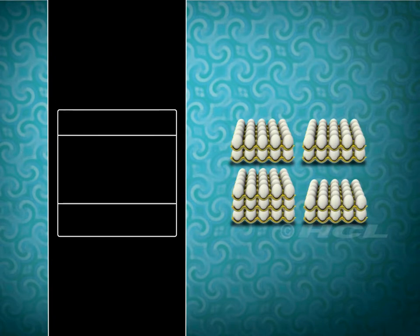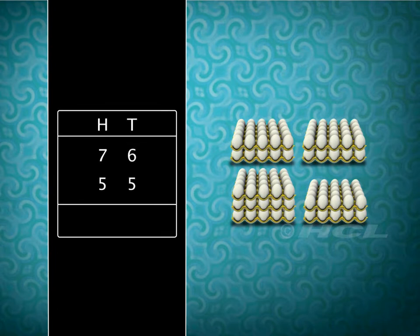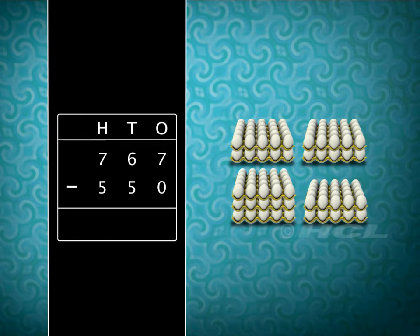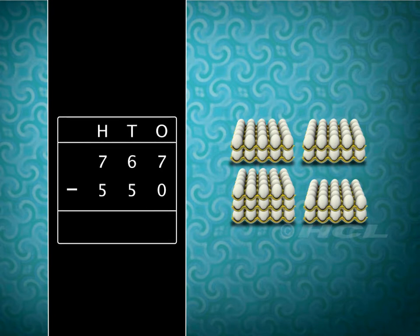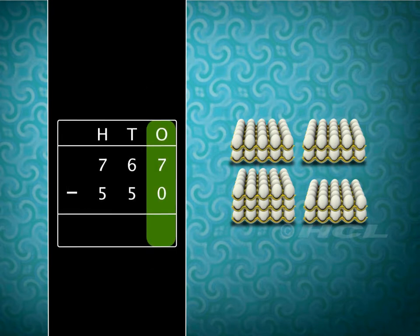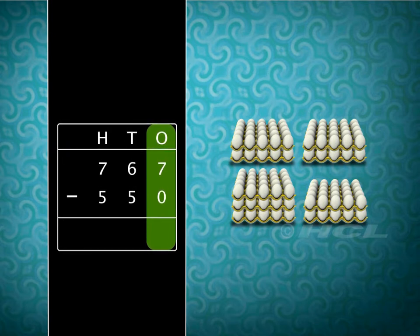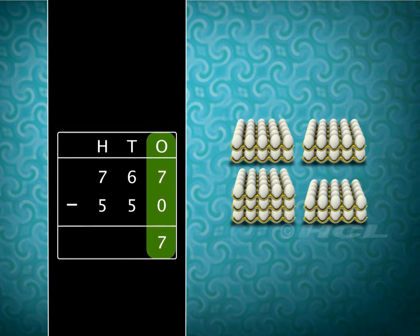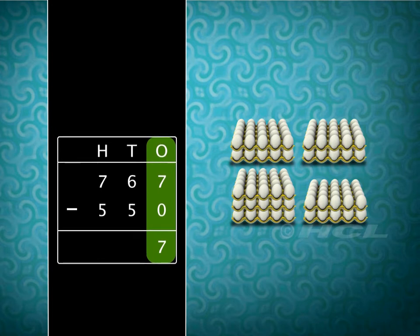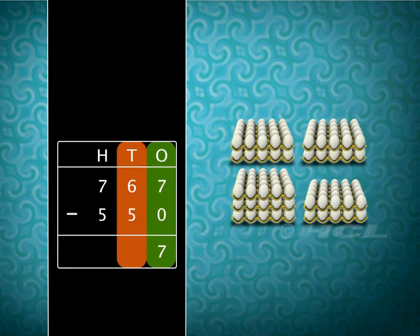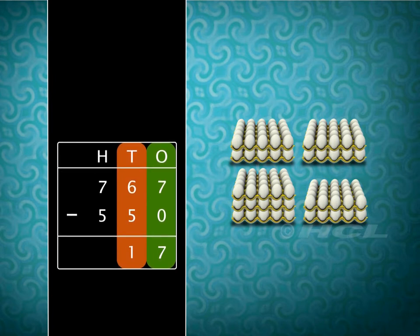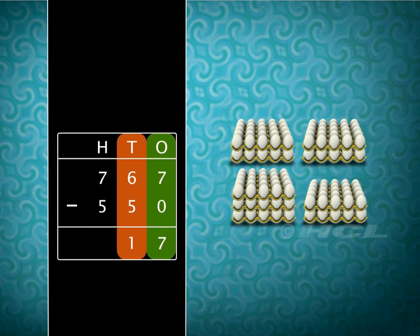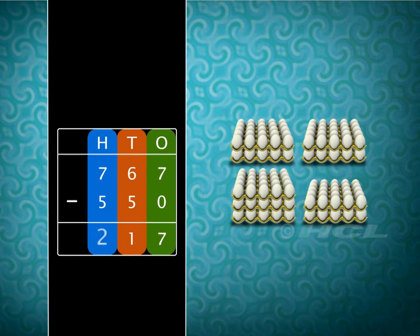Let's first write the two numbers in columns of hundreds, tens and ones and subtract. Like in addition, we always begin subtracting from the ones column. Subtracting the digits in the ones column, we get 7 as the answer. Next, subtracting the digits in the tens column, we get 1 as the answer. Finally, subtracting the digits in the hundreds column, we get 2 as the answer.